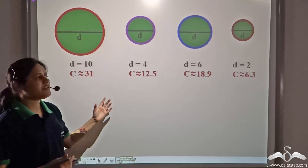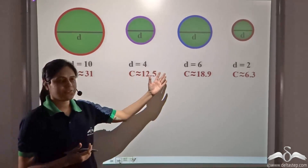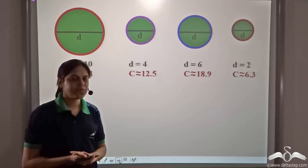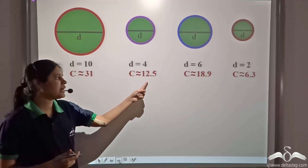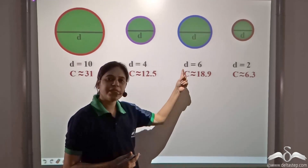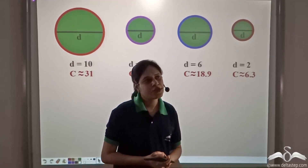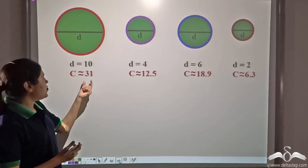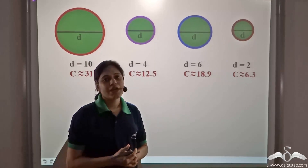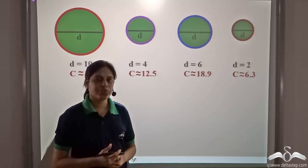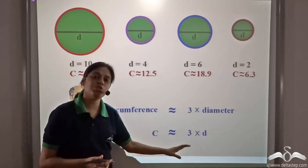The mathematician studied different circles in his laboratory, making big and small circles of different sizes. He measured their circumference with a thread and found: the circle with diameter 10 had a circumference of 31; diameter 4 had a circumference of 12.5; diameter 6 had a circumference of 18.9; and diameter 2 had a circumference of 6.3. In each case, the circumference is approximately equal to three times the diameter. He studied more and more circles and consistently found this pattern.